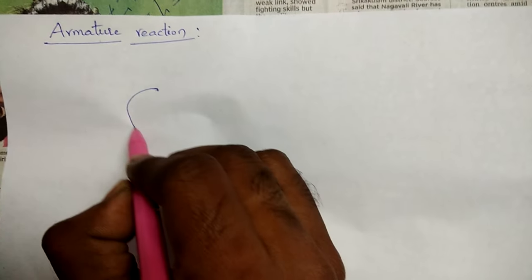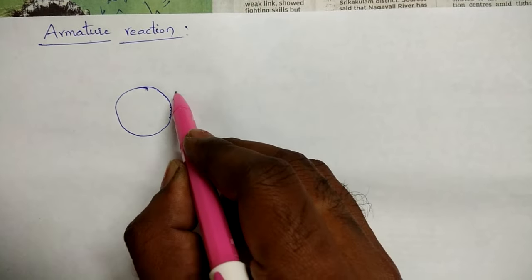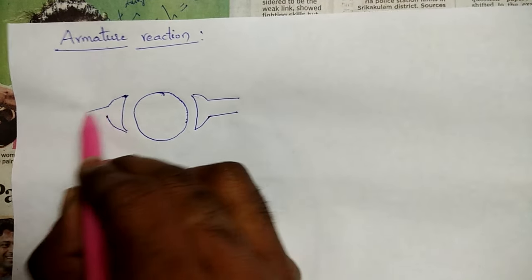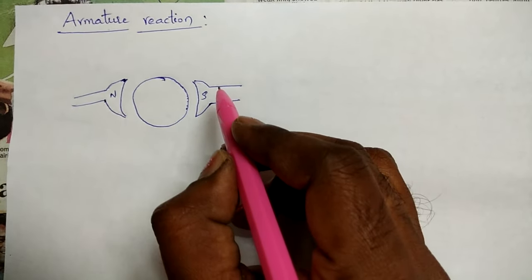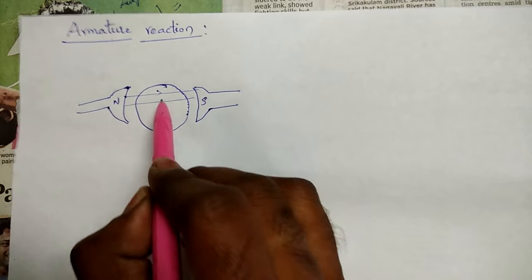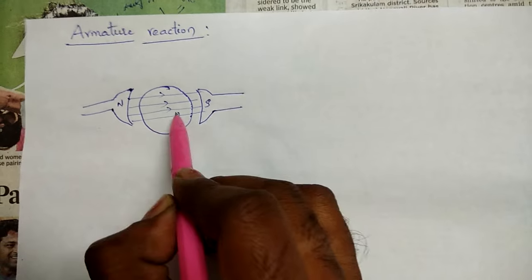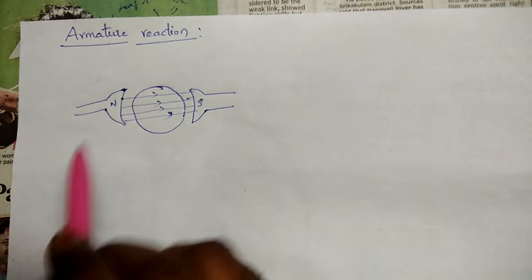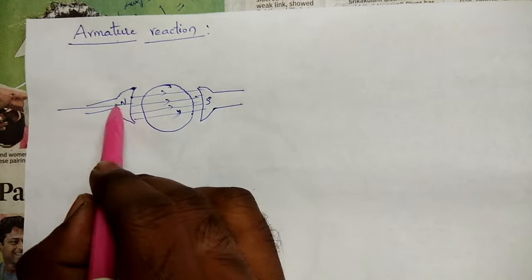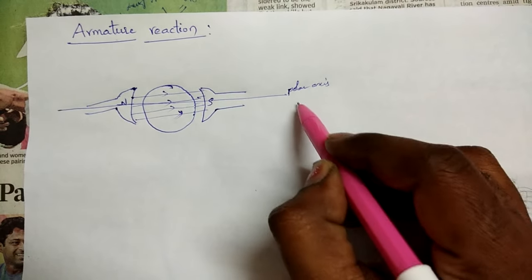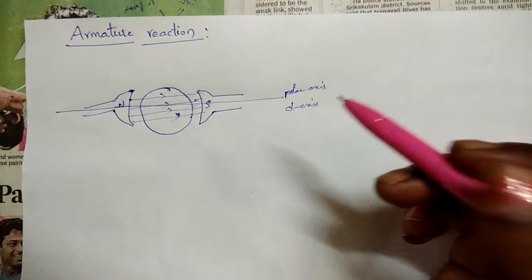Let us assume a DC machine. This is a rotor and there are two poles — one is N and the other is S. So there is a main field flux from north pole to south pole. Under no-load condition, the main field flux goes from north pole to south pole, and this axis which combines the two poles is called the polar axis.